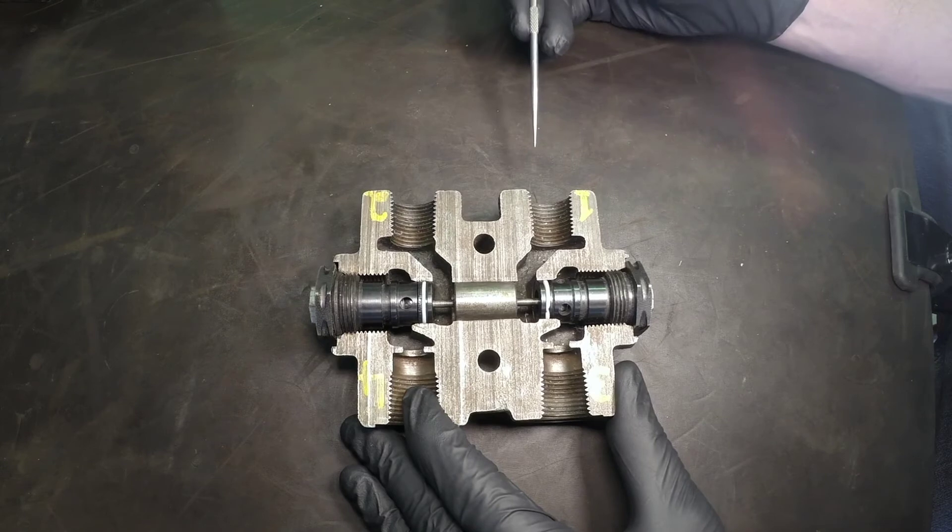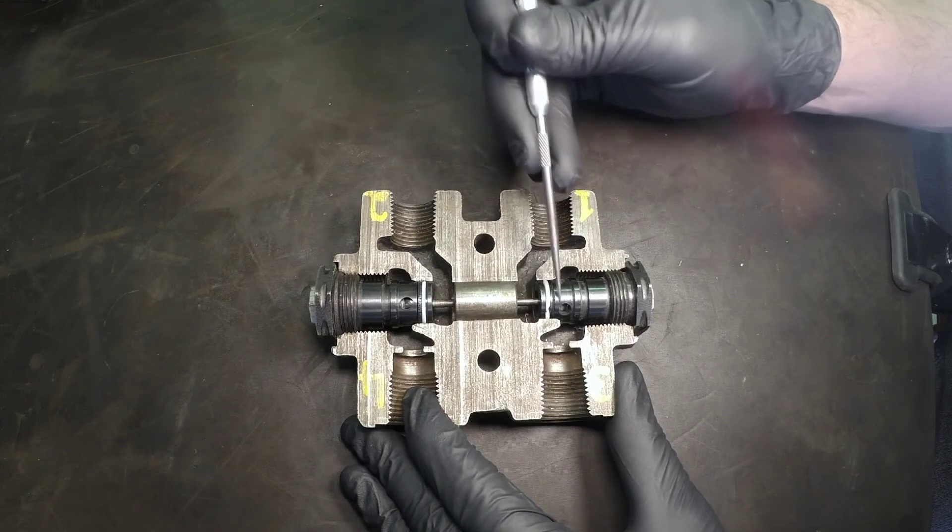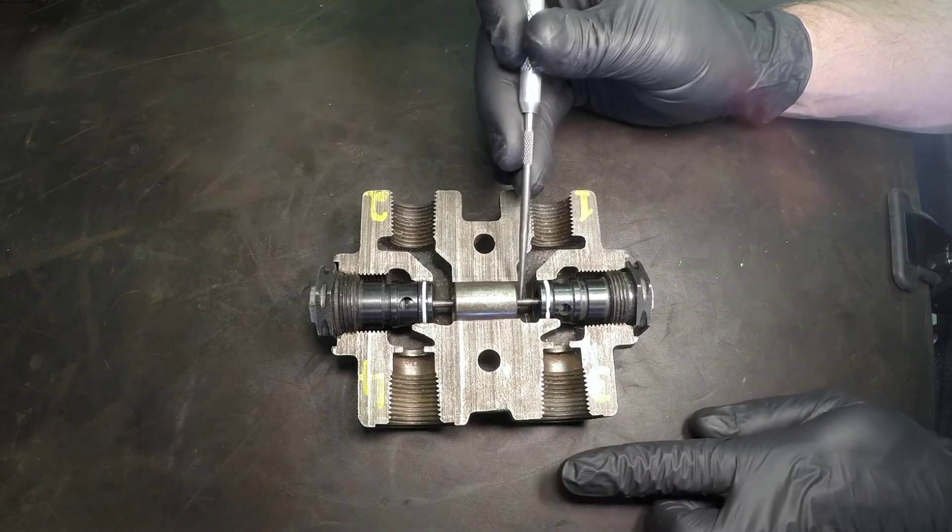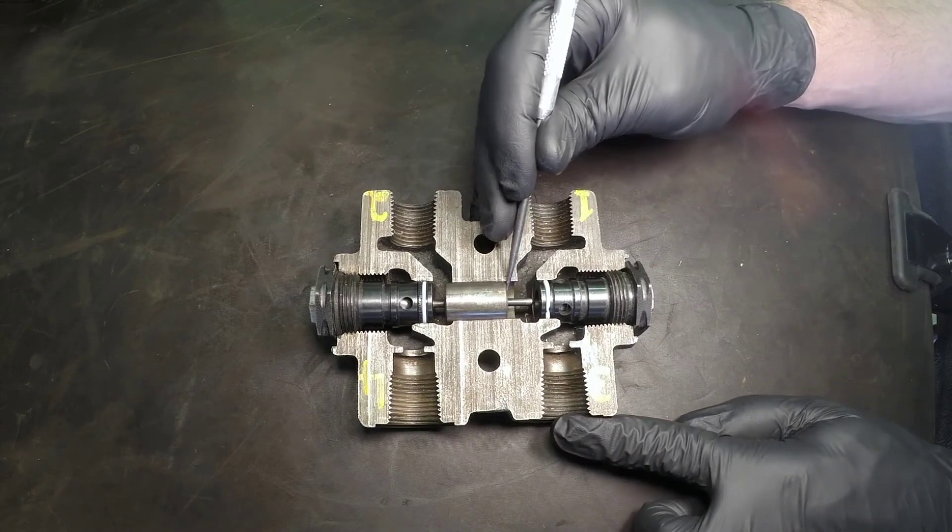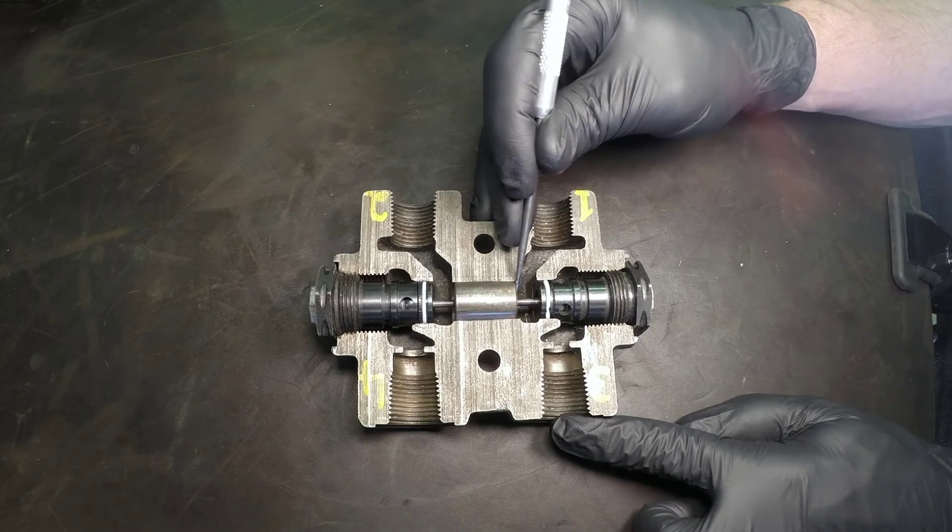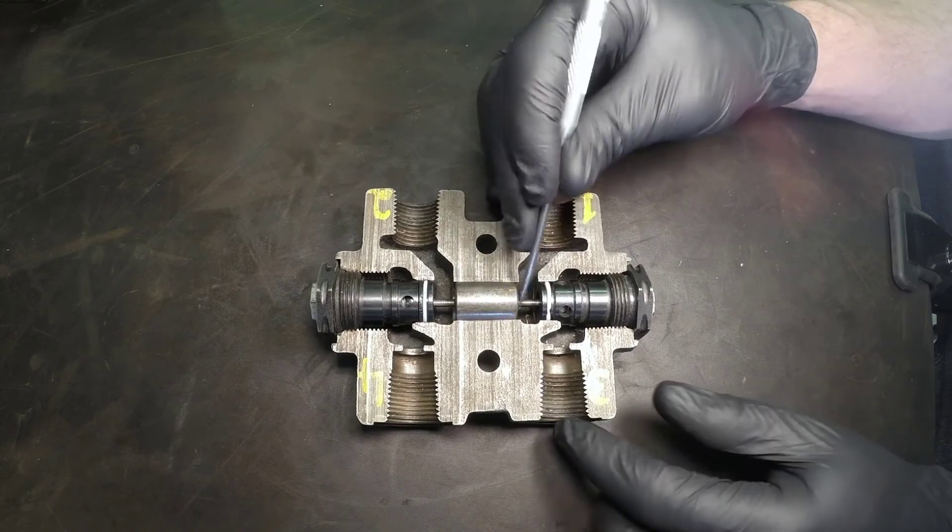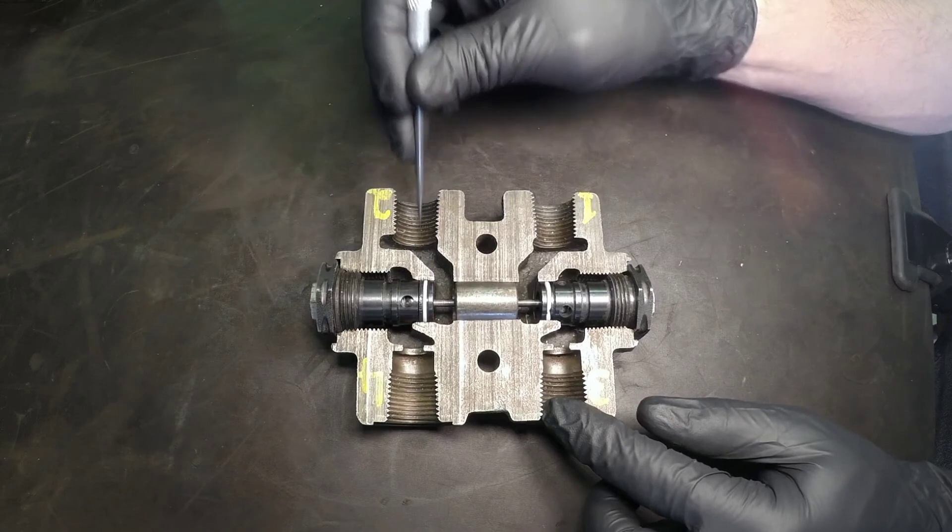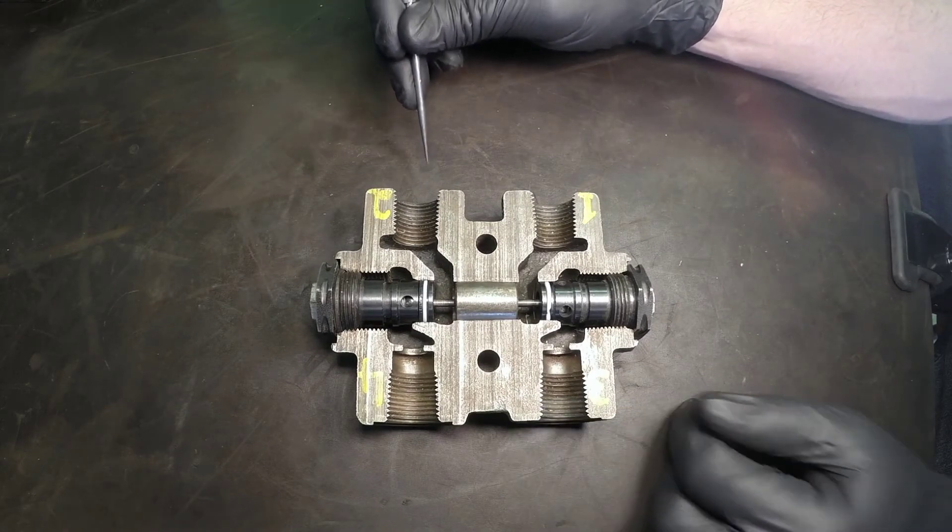So on extend, oil comes from B, comes through the check, comes to the base end of the cylinder. Pressure builds up on the base end of the cylinder. At the same time it builds up on this pilot slug right here, and it opens up the rod end of the cylinder back to work port A, where it's able to go back to tank.